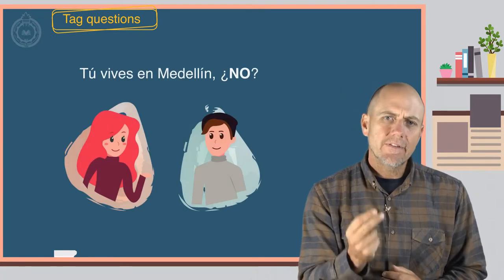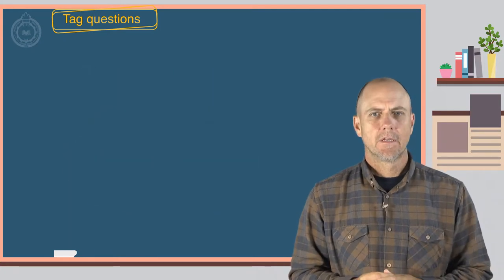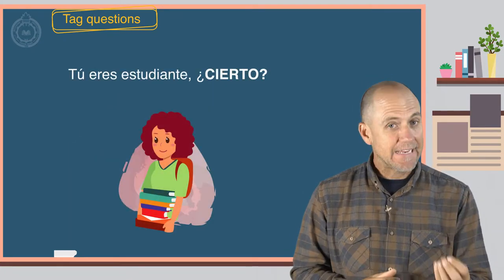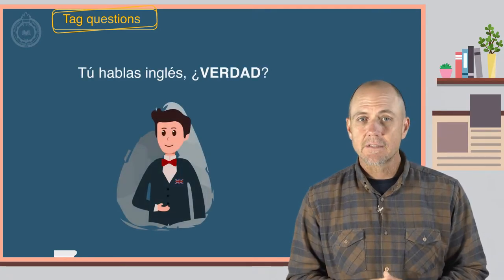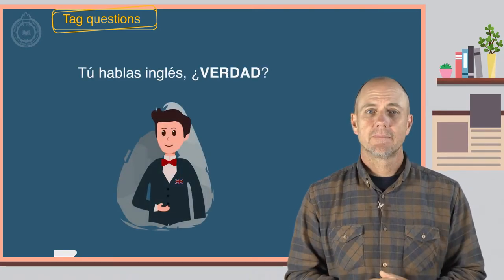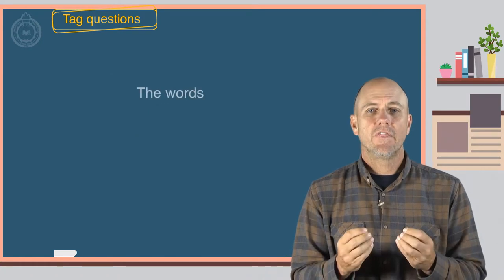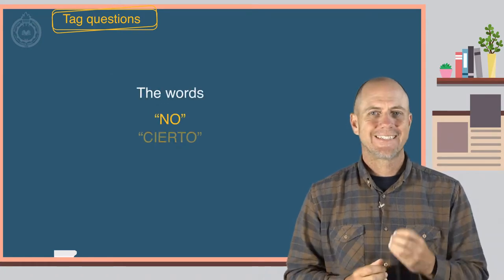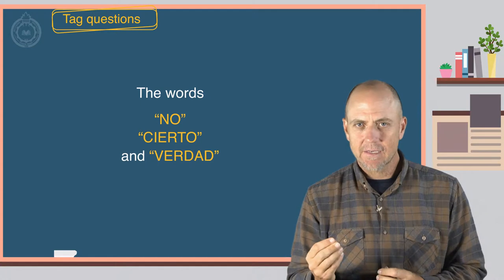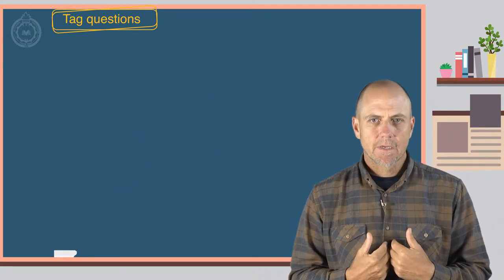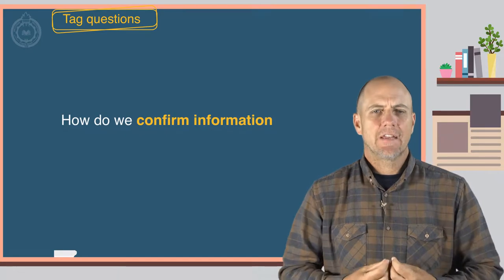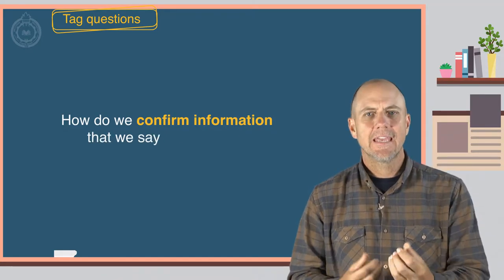Tú vives en Medellín, no. Tú eres estudiante, cierto. Tú hablas inglés, verdad. The words no, cierto, and verdad confirm what we say. But how do we confirm information that we say in English?